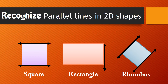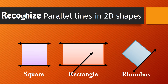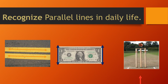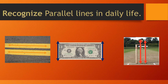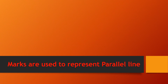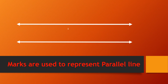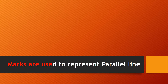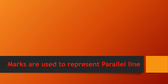Parallel lines can go in different ways. You can also recognize parallel lines in daily life — they appear on roads, in a dollar knot, or in cricket wickets. There are marks to represent parallel lines: we can draw short lines on them to indicate they are parallel.